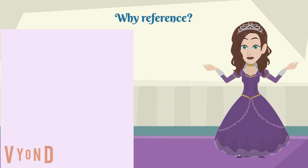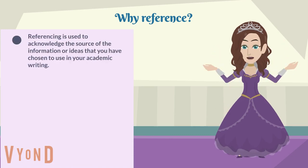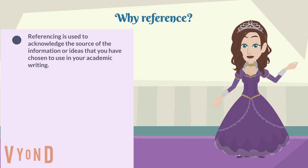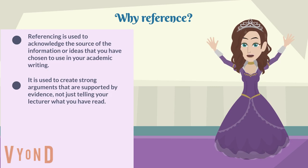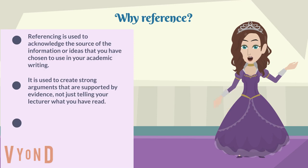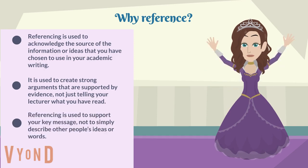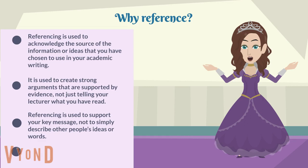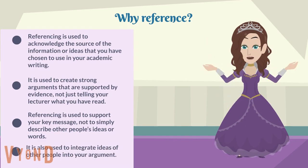So why must you use referencing? Referencing is used to acknowledge the source of the information or ideas that you have chosen to use in your academic writing. It is used to create strong arguments that are supported by evidence, not just telling your lecturer what you have read. Referencing is used to support your key message, not to simply describe other people's ideas or words. It is also used to integrate the ideas of other people into your argument.